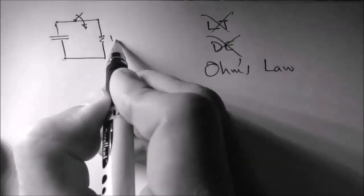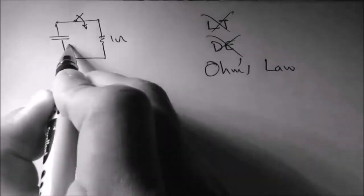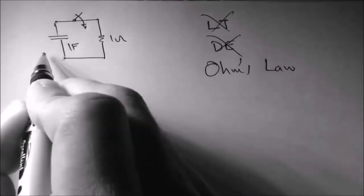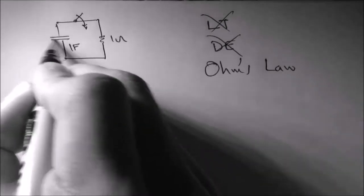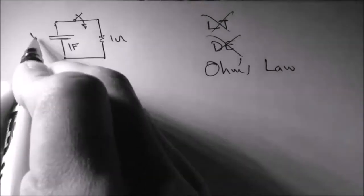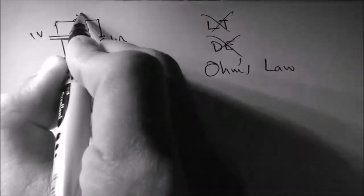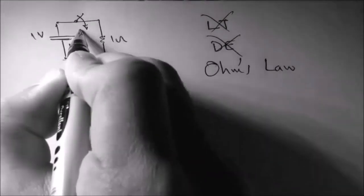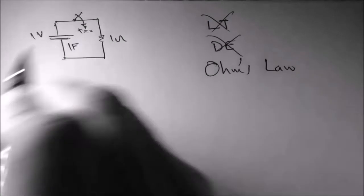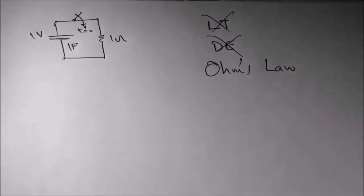Now if we have a one ohm resistor and one farad capacitor that is initially charged with one volt, and we have a switch right here that would close at t equals zero, the discharge would begin. So that is our problem.